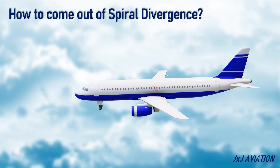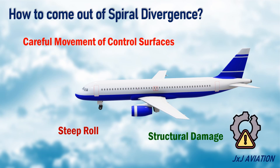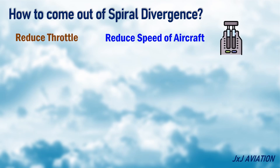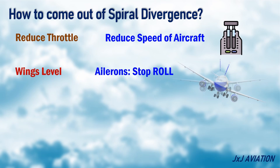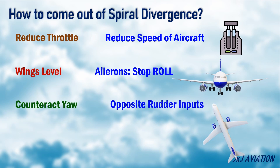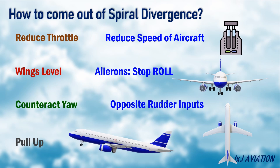How to come out of a spiral divergence? To come out of this instability, careful movement of the control surfaces is required, especially when the roll has become too steep. Sudden movements of the control surfaces can lead to structural damage. First, reduce throttle — reduce the speed of the aircraft by reducing the throttle. Then use the ailerons to level the wings and stop the rolling motion. Apply opposite rudder inputs to counteract the yawing motion. Finally, a gentle pull up using the elevator is to be done after the wings are level and yaw has stopped.